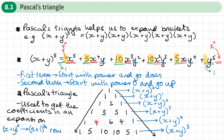So the second number in the row will tell you which row to use. There's a 5 as the second number in, so those will be the coefficients for the x to the power 5 expansion. Or you can count: row 1, 2, 3, 4, 5, 6 — the sixth row for a power 5 expansion.